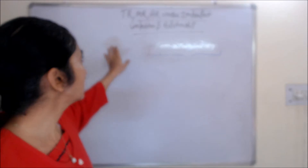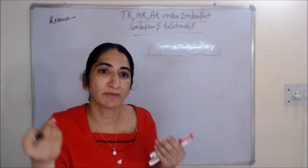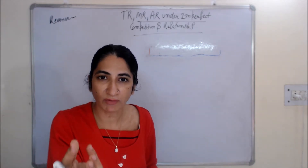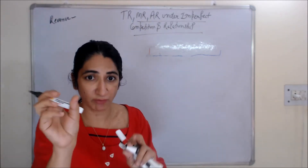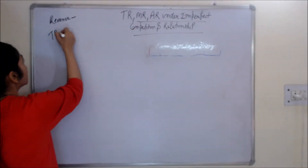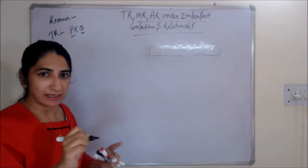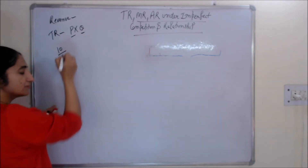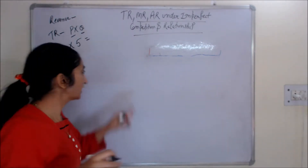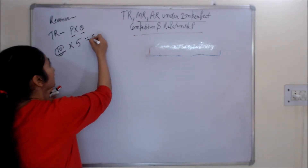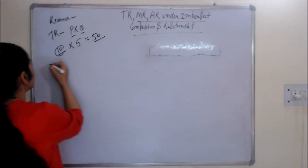Here we are talking about TR, MR, and AR. First, let's talk about total revenue. Total revenue is the total amount you receive from selling your product. For example, if you sell a product in quantity 10 and the price per unit is 5, then your total revenue is 50 — that is, quantity multiplied by price gives you your total revenue.